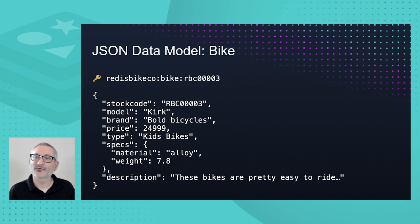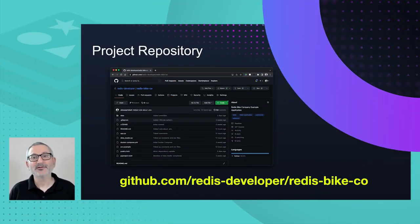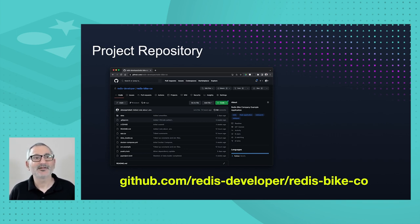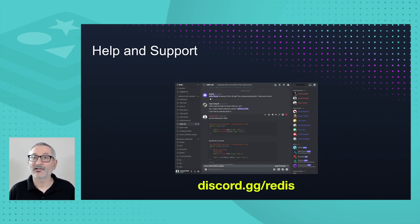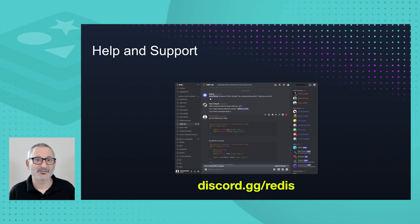If you'd like to follow along, we've provided all the data and code in a GitHub repository. We've also provided full instructions for how to get started and load the data into a Redis instance. You'll need Docker Desktop, Python 3, and a copy of Redis Insight. If you need help or support, join our Discord at discord.gg/redis. There's a dedicated channel for supporting this workshop, as well as a wider community for Redis questions.